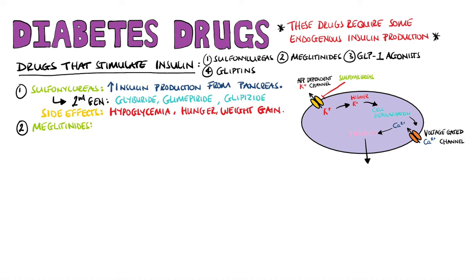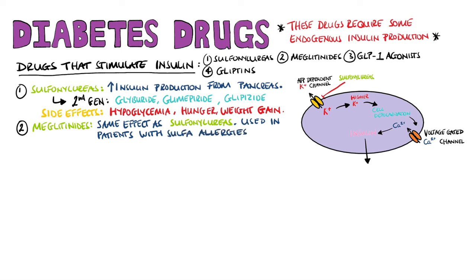Meglitinides work similarly to sulfonylureas but are non-sulfur drugs, making them alternatives for patients with sulfur allergies. Examples include repaglinide and nateglinide. Side effects include hypoglycemia, especially when the patient drinks alcohol, as well as weight gain.